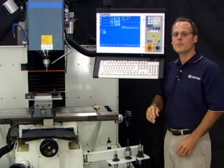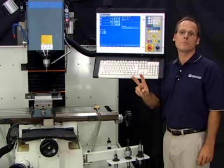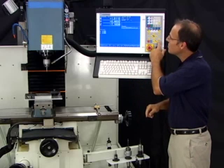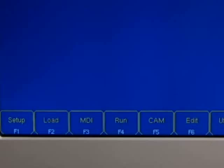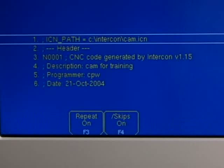To start running our program, I'm going to press the Cycle Start button two times. The first time I press Cycle Start, it loads the G-code of the part we just got done programming.